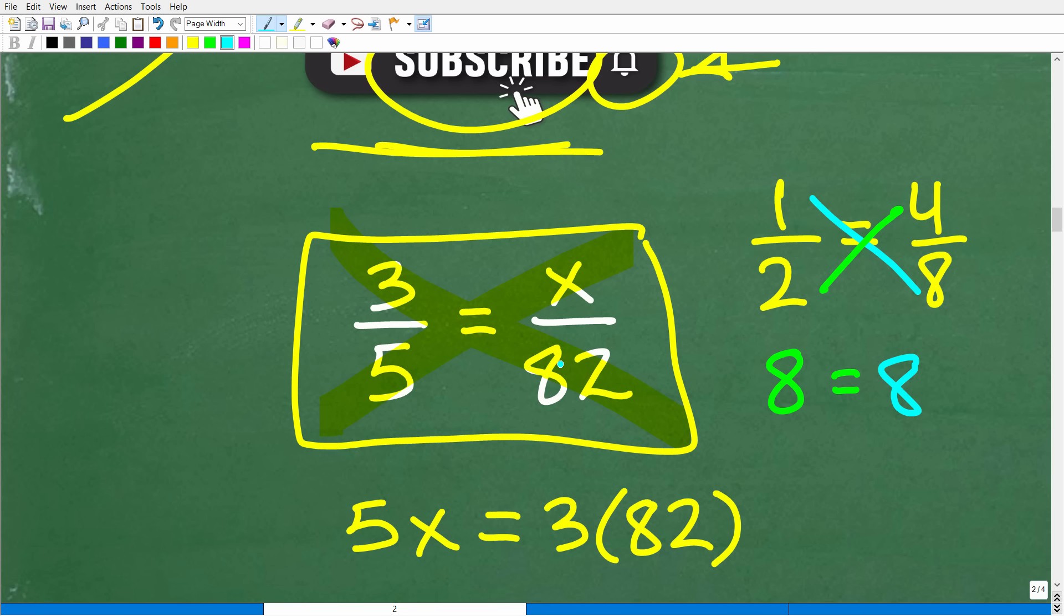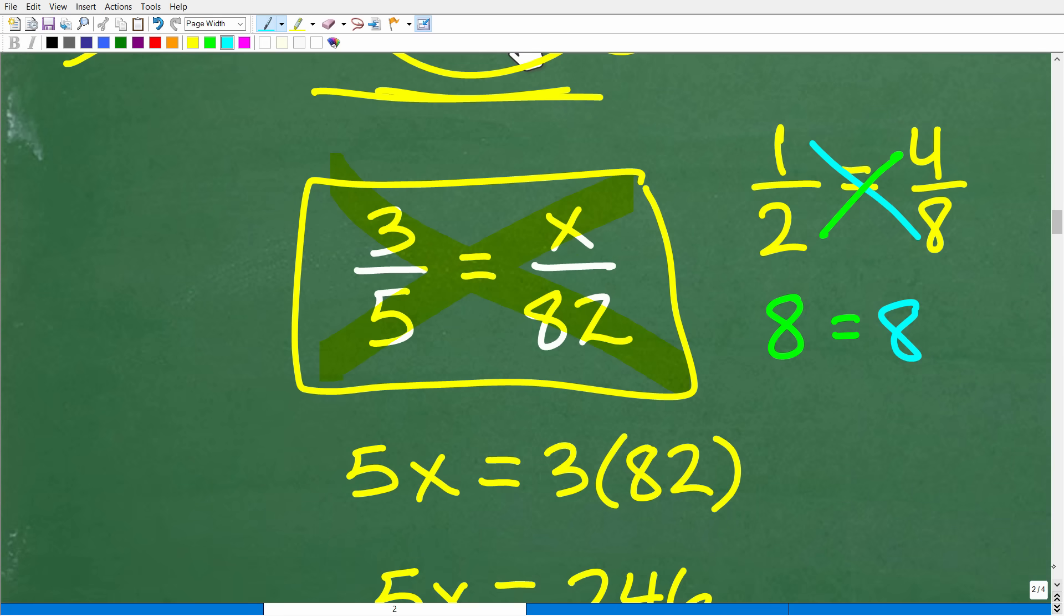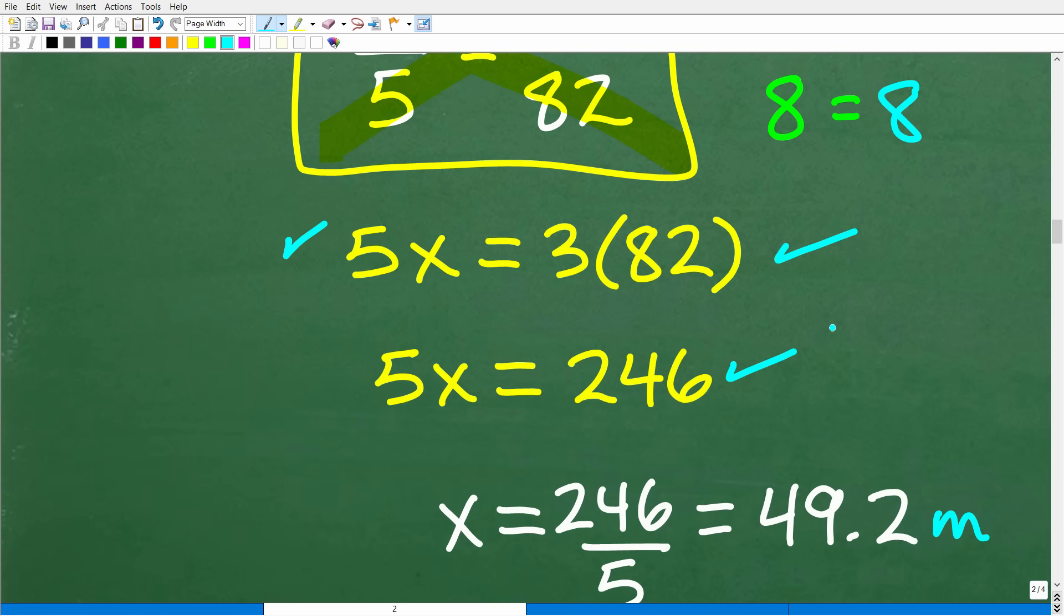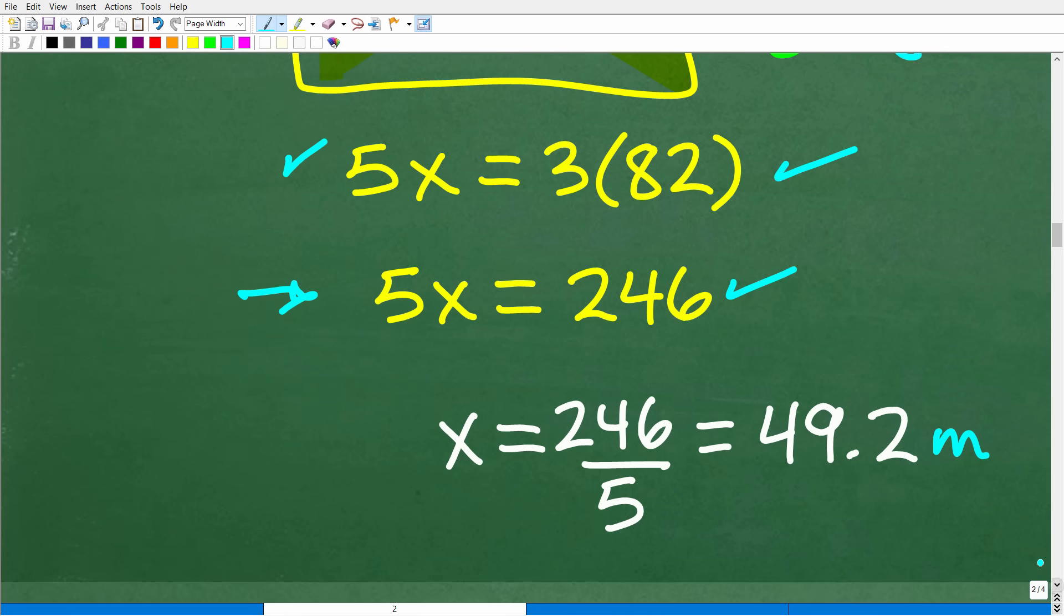All right, so five times X is five X. Three times 82 is going to be three times 82. So three times 82 is 246. So now we have this basic linear equation. Five X is equal to 246. To solve for X, all we have to do is divide both sides of the equation by five. So X will be equal to 246 divided by five, and that, of course, will be 49.2.